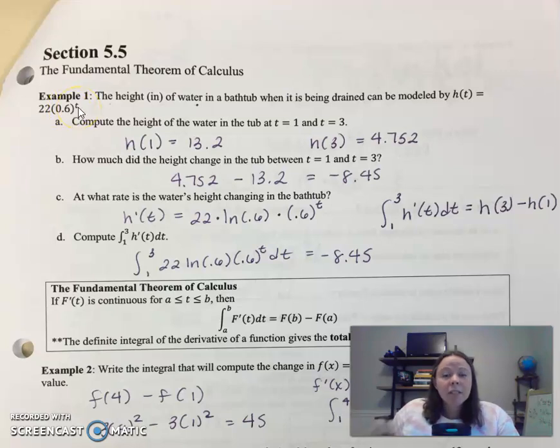So if you put in a time, it's going to spit out the height in inches. So it says compute the height of the water in the tub at 1 and 3. So plug in 1 and 3 into your function, spits out the heights.